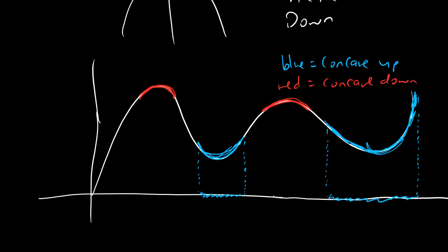Similarly, I think everything else is going to be concave down. Let me change my mind — I think this blue one here goes until about there. Yeah, I think that looks better. So I think the concave down regions are pretty much everything else: concave down there, concave down there, concave down there. And we can shade in the x-axis in blue and red just to illustrate what those regions are.